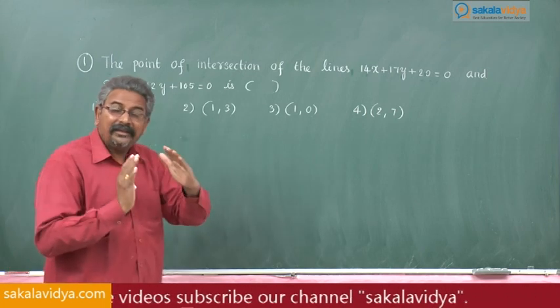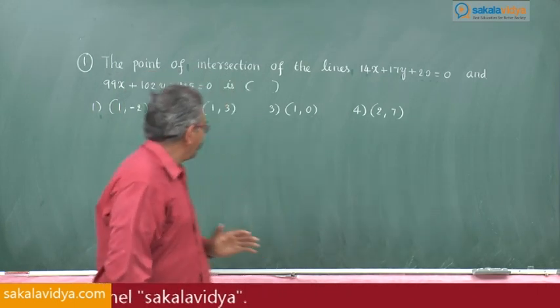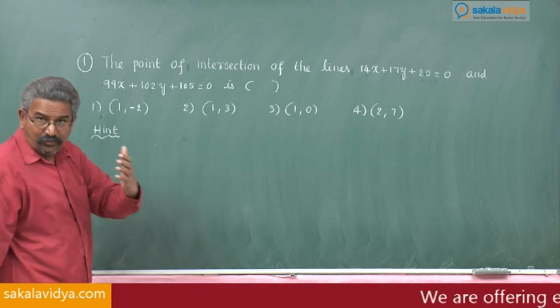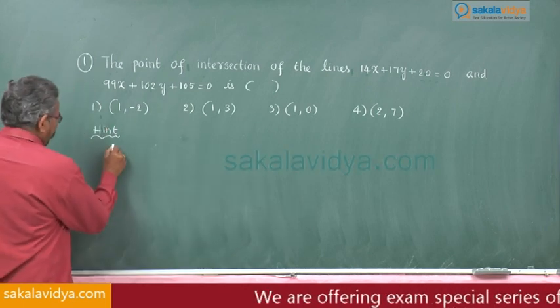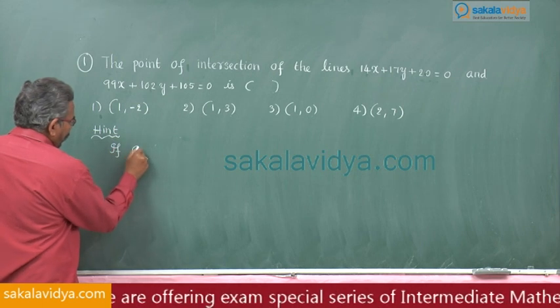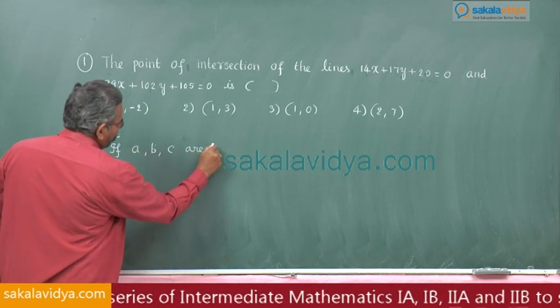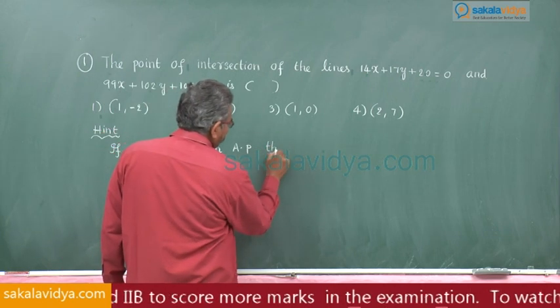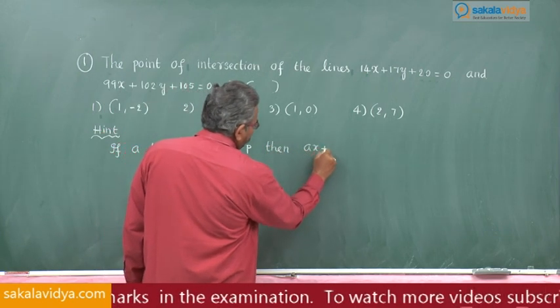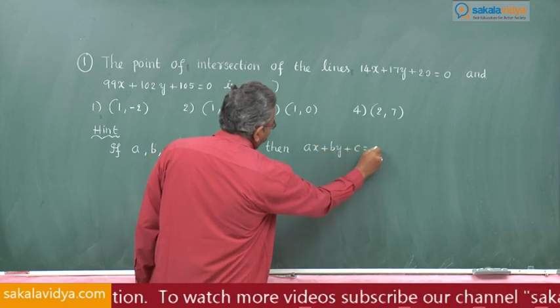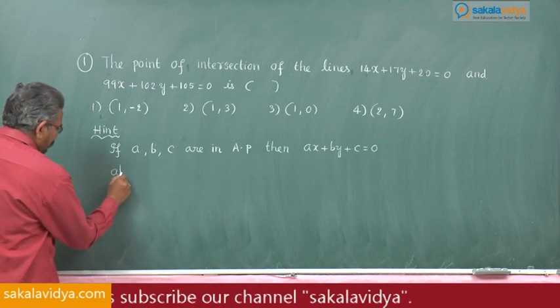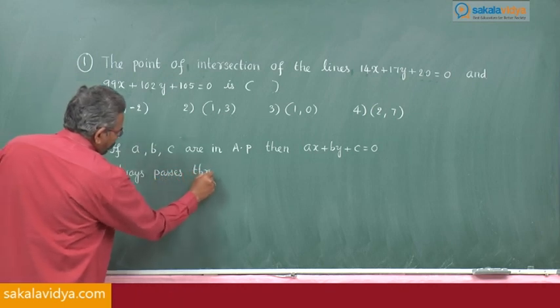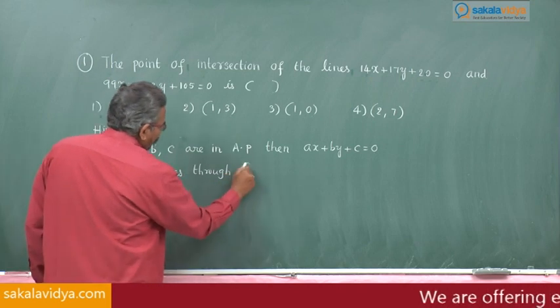Better I will give the hint for you. Let us note down the hint, this is the shortcut or clue technique: If A, B, C are in arithmetic progression (AP), then Ax + By + C = 0 always, that means the line passes through (1, -2).